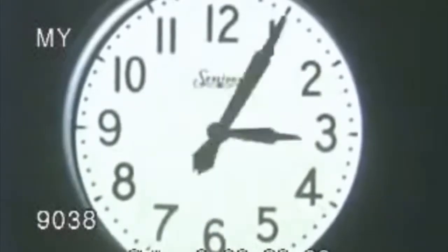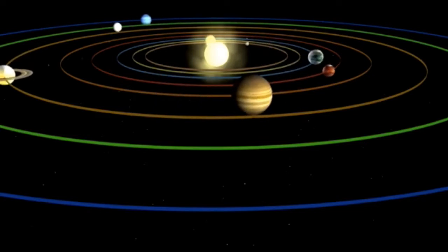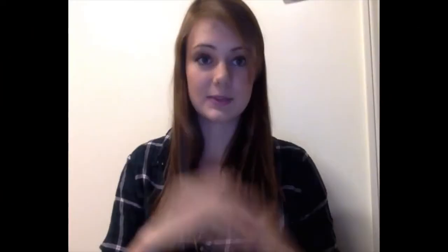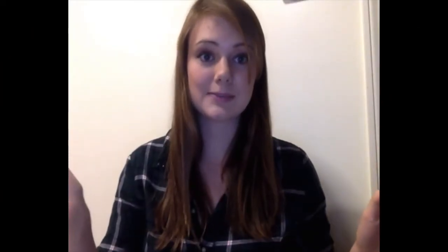In the beginning, about 13.7 billion years ago, the Big Bang happened and that brought forth our entire universe. Fast forward about 9.1 billion years and from that chaos formed our solar system that we live in today — and hopefully travel through soon.